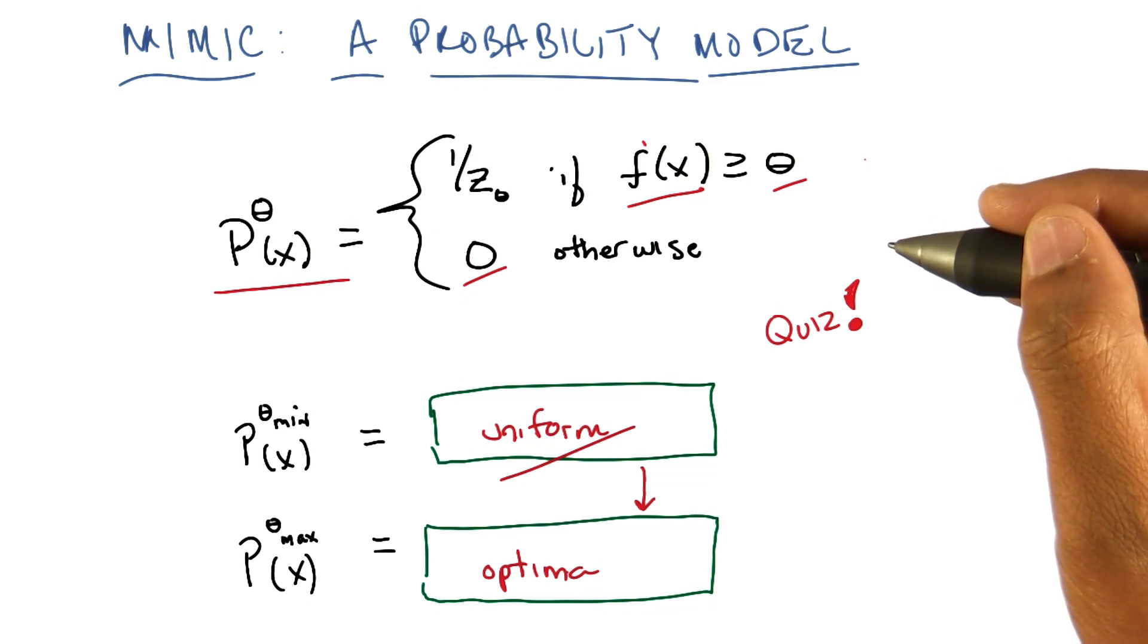So, okay, and the first one being something that's really easy to sample from, because we're just sampling uniformly from the input space. Right. And the second being something that would be really useful to sample from, because if we could sample from the set of optima, it's really easy to find an optimum. Exactly.